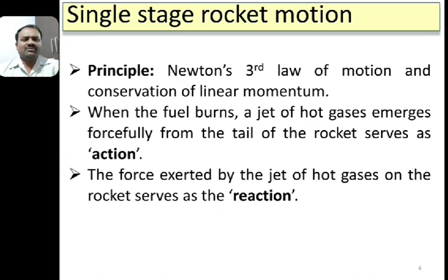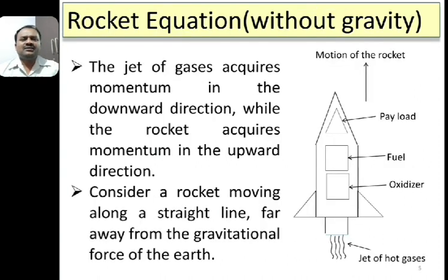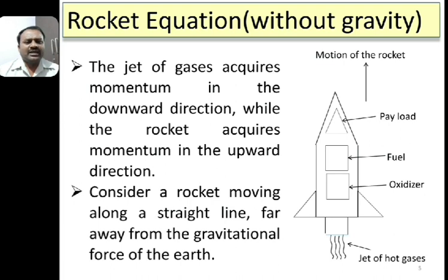The same thing can be explained using the law of conservation of momentum. When the hot gases are exhausted from the tail of the rocket, the jet of hot gases carries momentum in the downward direction. Similarly, the rocket carries momentum in the upward direction, so the total momentum of the system of the jet of hot gases and the rocket remains constant.